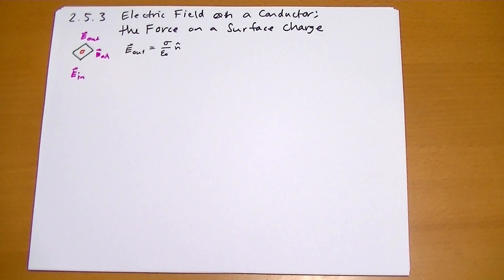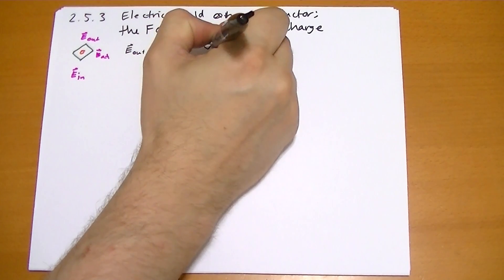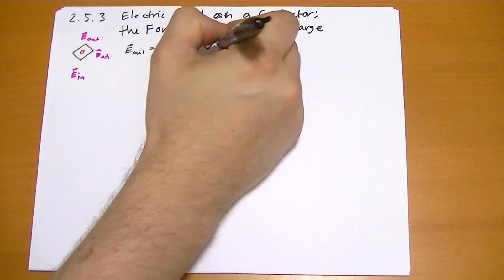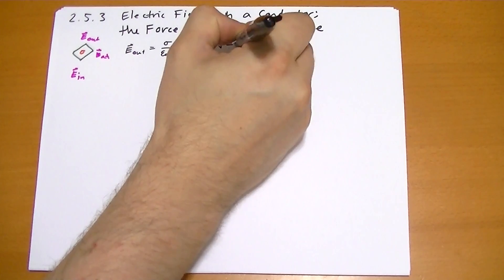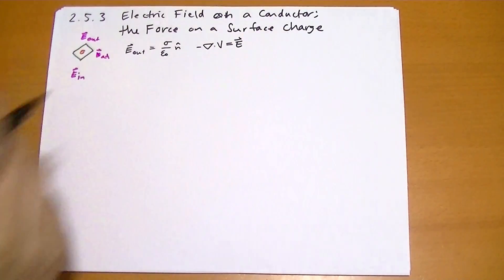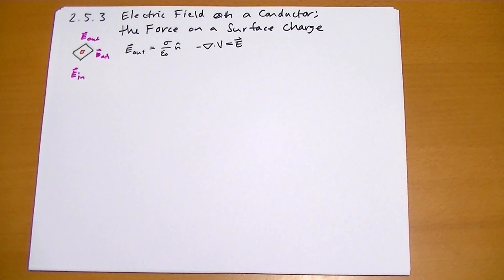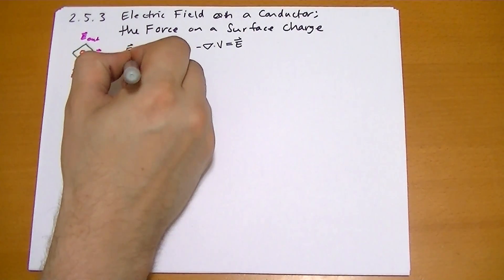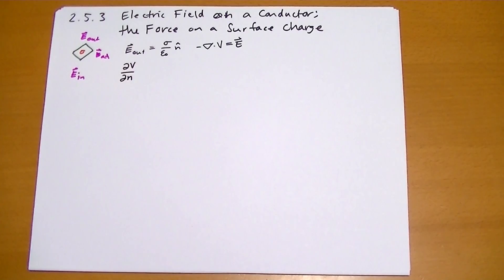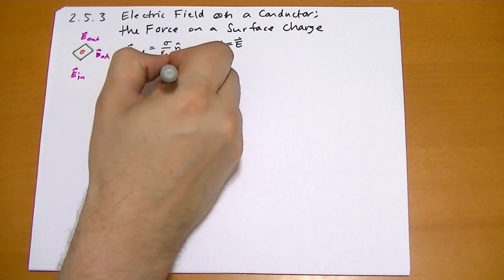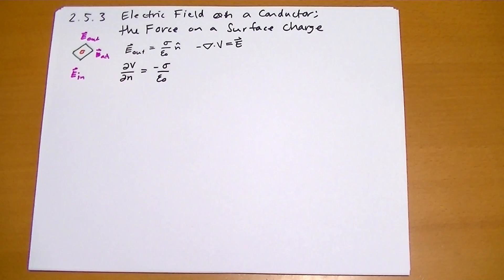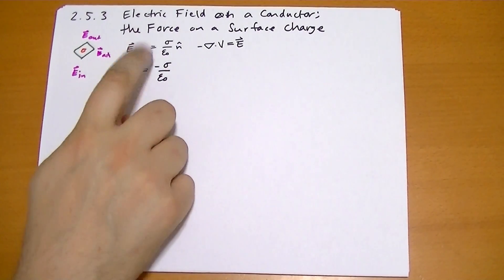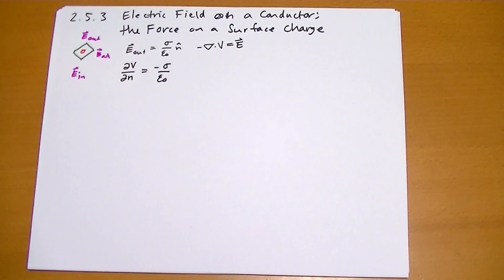In terms of potential, we have minus grad V equal to the electric field. So that means minus dV/dn is equal to minus the charge over epsilon-naught. These are two important equations that you're probably wanting to remember.